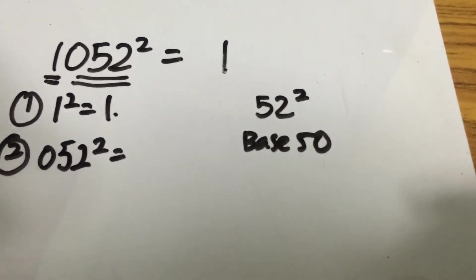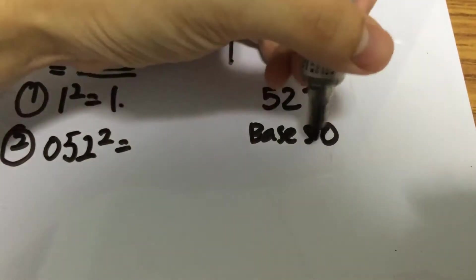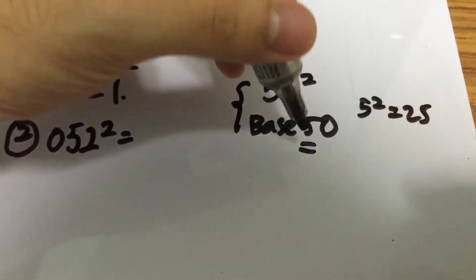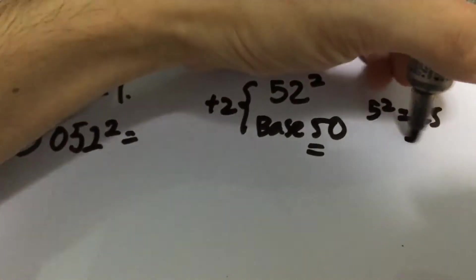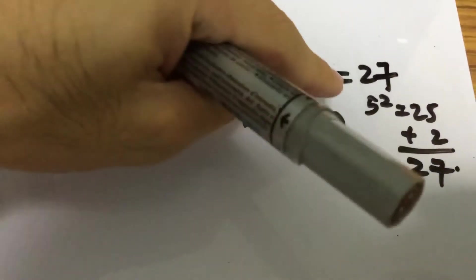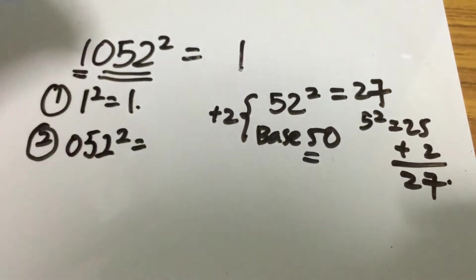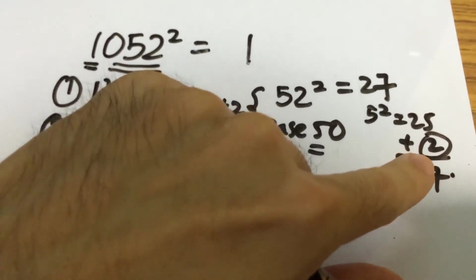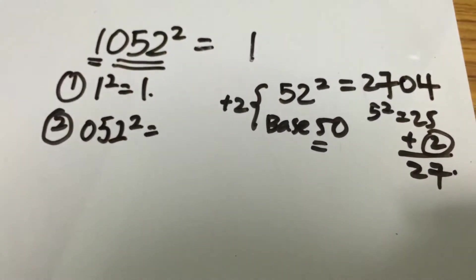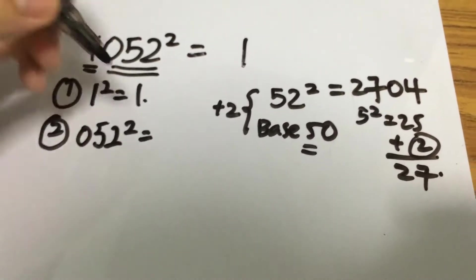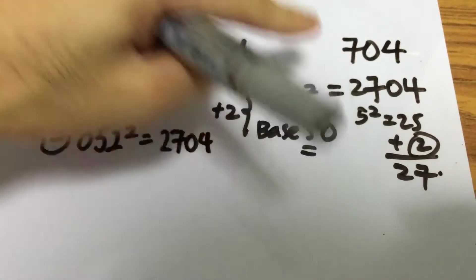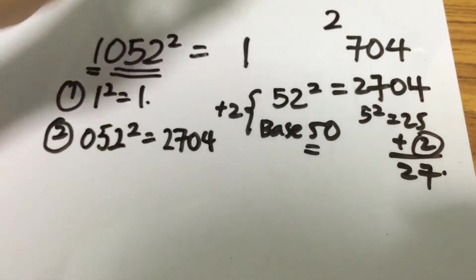To calculate 52 squared, first we square 5, which gives 25. Then we find the difference between 52 and 50 — 52 is 2 more than 50 — so we add 2 to 25, giving 27 as the first two digits. Then we square the difference, which is 2, giving 4. So 52 squared is 2704. Since we can only include the last three digits in this form, we write 704 and carry the 2.